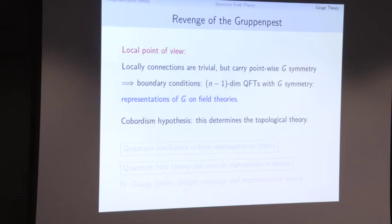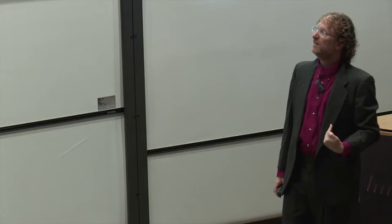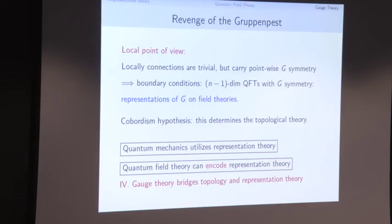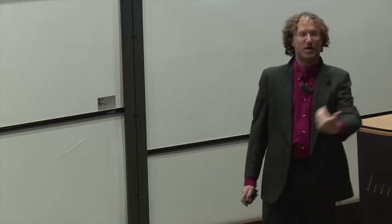In the topological setting, the cobordism hypothesis tells us this determines the whole theory. This is the revenge of the group: in quantum mechanics we utilized representation theory, but in quantum field theory we can actually encode an entire representation theory as boundary conditions within a particular quantum field theory. This is our fourth theme: gauge theory is a bridge between topology and representation theory.